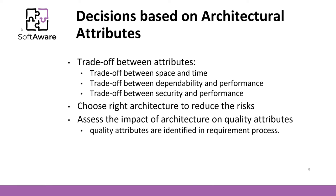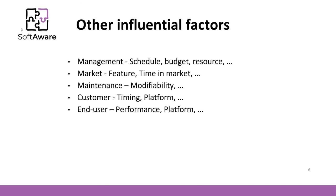During the decision-making process, first are considered architectures that allow reducing identified risks. It is also necessary to assess the impact of architecture on quality attributes identified in the requirements process. Even if architects agree on what architecture is best for the project, it doesn't mean that will be the final decision. Various other criteria from stakeholders might come into play, and it might appear impossible to use the chosen architecture because of budget and time to market. Therefore, the final architecture needs to be negotiated with the stakeholders.